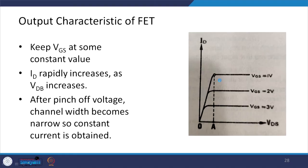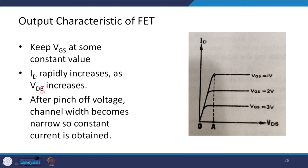Looking at FET characteristics: keeping VGS at a constant value, the drain current Id rapidly increases as VDS increases. After the pinch-off voltage, the channel becomes narrow and current becomes constant. These curves are shown for different VGS values of 1 volt, 2 volts, and 3 volts.